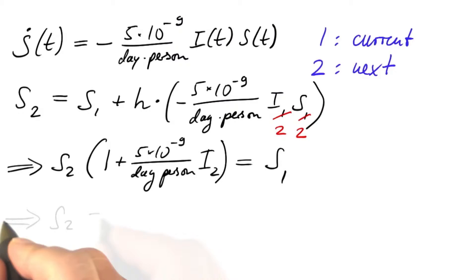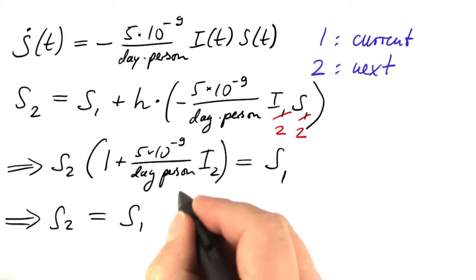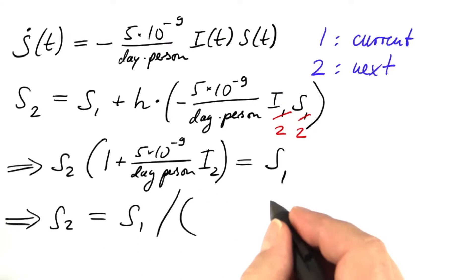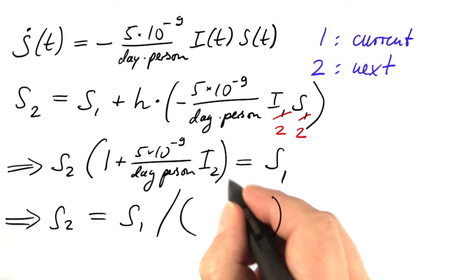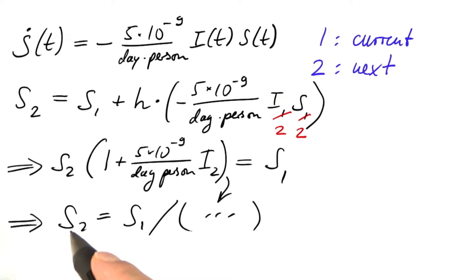And all that remains on the right-hand side is s1. And now that is simple to solve. s2 equals s1 divided by the very same expression that we've got here. I'm lazy. I don't spell it out. This completes the computation of s2 for which we need i2, but we have computed that in a line before.